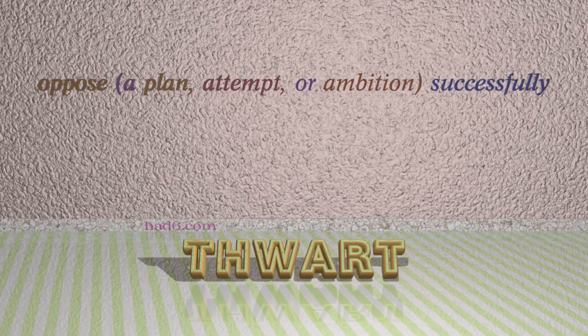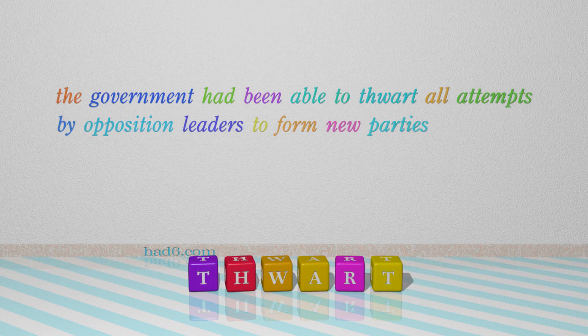Number 7: Thwart. Which means: Oppose a plan, attempt, or ambition successfully. For example: The government had been able to thwart all attempts by opposition leaders to form new parties.